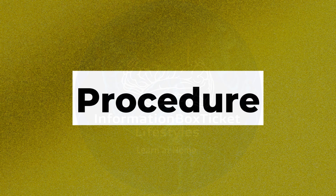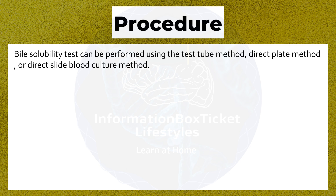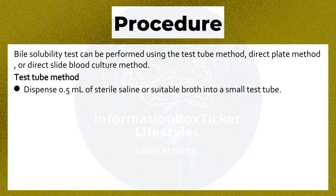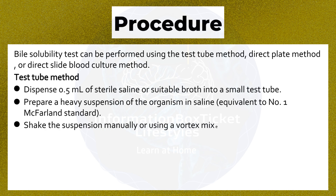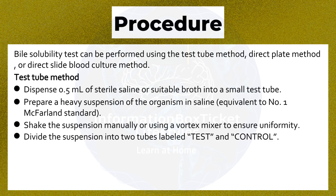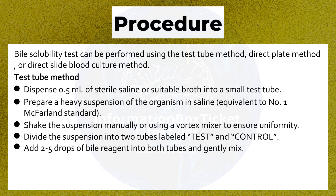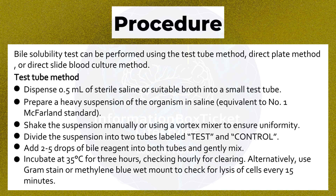Procedure — Test Tube Method: Dispense 0.5 milliliters of sterile saline or suitable broth into a small test tube. Prepare a heavy suspension of the organism equivalent to No. 1 McFarland standard and shake to ensure uniformity. Divide into two tubes labeled Test and Control. Add two to five drops of bile reagent into both tubes and gently mix. Incubate at 35 degrees Celsius for three hours, checking hourly for clearing. Alternatively, use gram stain or methylene blue wet mount to check for lysis every 15 minutes.